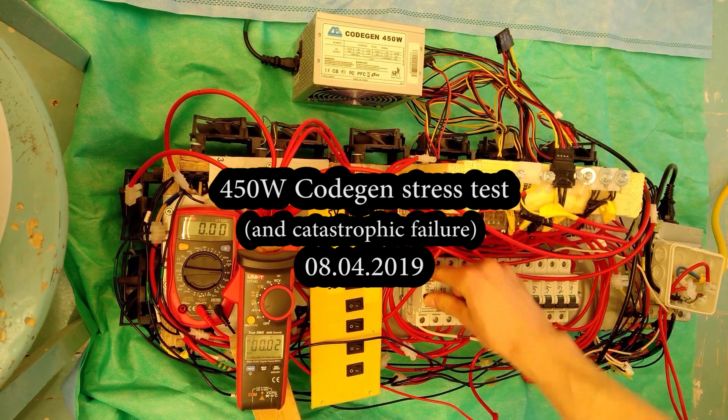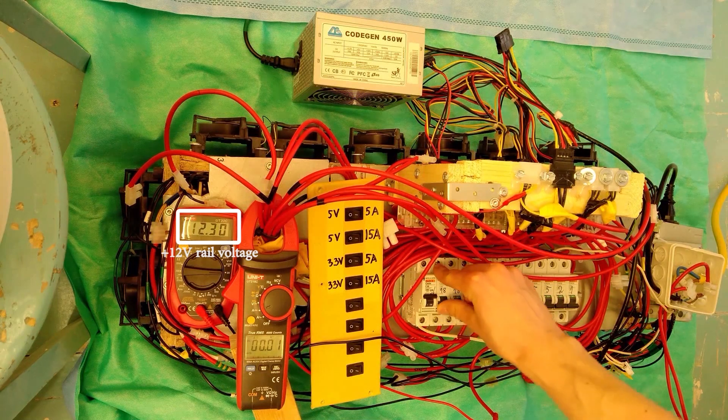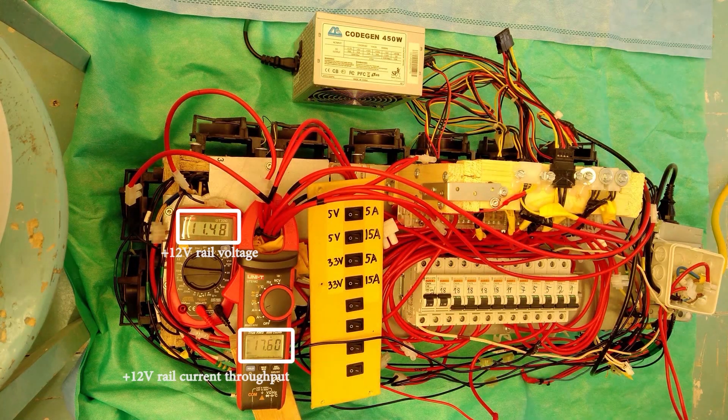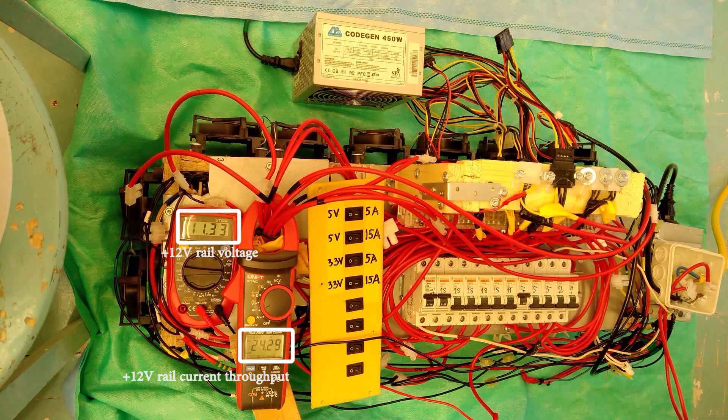Hi, today we are stress testing the COAGEN 450W power supply. I use a multimeter to display 12 volt rail voltage and an amp clamp to measure 12 volt rail current throughput.